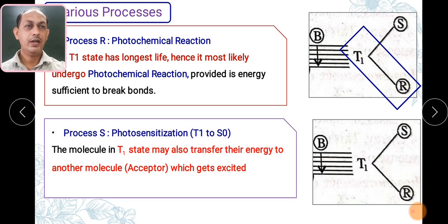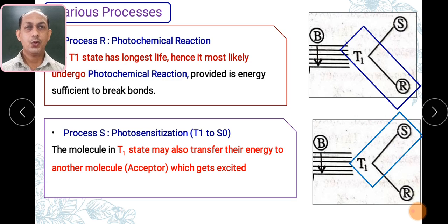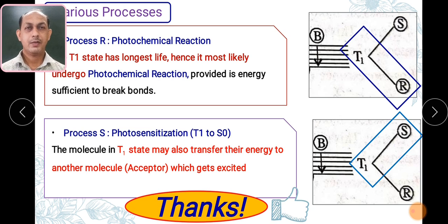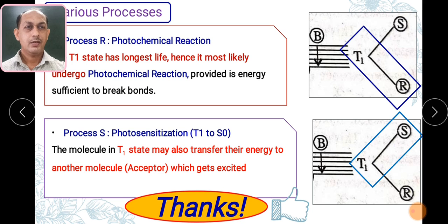Process S is photosensitization — from T1 to S0. In this process, the molecule in the T1 state transfers its energy to another molecule called the acceptor — that is, from donor to acceptor, which then gets excited. S stands for photosensitization. I hope you have understood the various processes taking place in the Jablonski diagram. Not all processes take place every time — only some will be observed in specific cases. This is a very important topic from an examination point of view. Thank you very much.